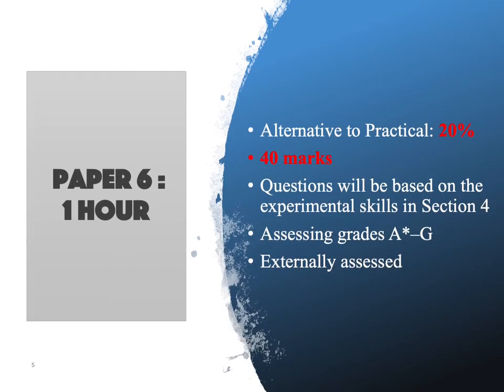The third paper is Paper 6. Students who opt for core or extended paper will take the same paper. Students are required to complete the paper within 1 hour. There are 1 to 3 questions based on experimental skills in section 4. A total of 40 marks for this paper contributes 20% of the total marks, and is externally assessed with grades from A star to G.